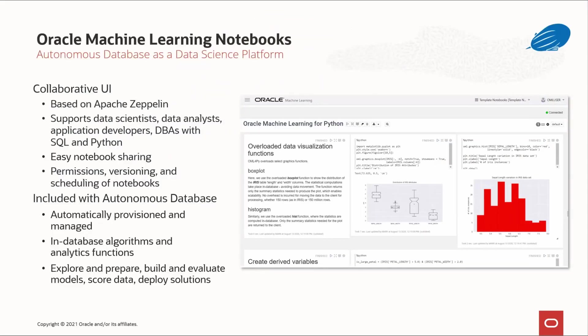On Autonomous Database, Python users access OML for Python via OML notebooks, which provides a collaborative user interface based on Apache Zeppelin technology, further extending Autonomous Database as a data science platform. Data scientists, analysts, developers, and DBAs can use both SQL and Python in the same notebook, using the most appropriate language for the problem at hand. They can also view notebook changes by team members in real-time. These data science team members can explicitly share notebooks and templates, version notebooks, and schedule them to run at a set time or on a repeating schedule. By virtue of being included in Autonomous Database, machine learning functionality is automatically provisioned and managed. Through OML notebooks, users have access to the in-database algorithms and analytics functions to explore and prepare data, build and evaluate models, score data, and deploy solutions.